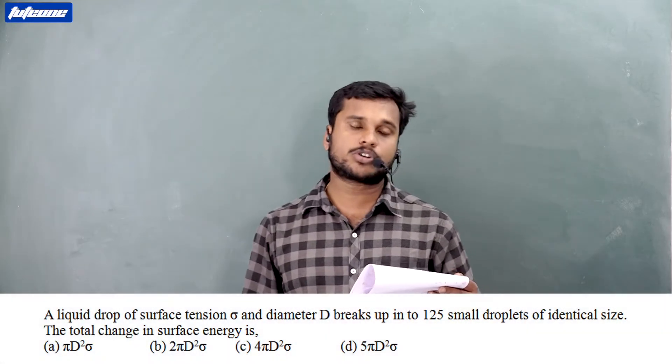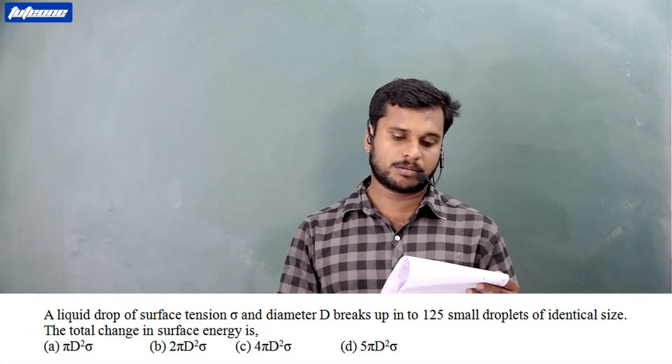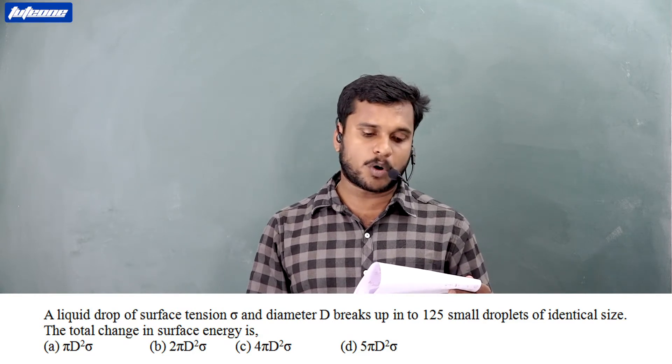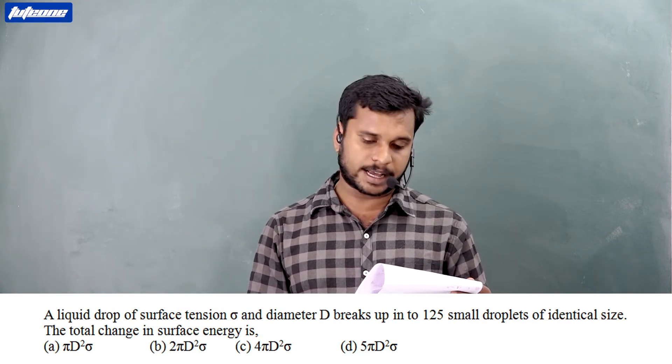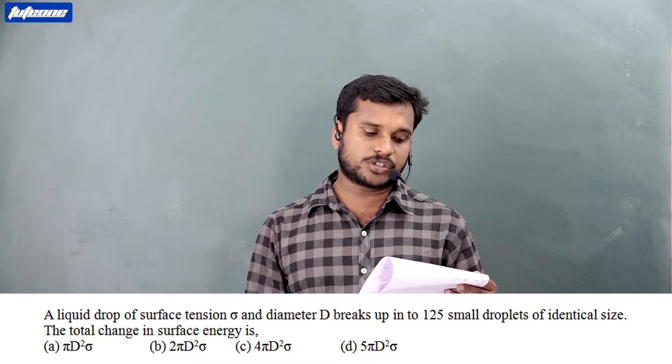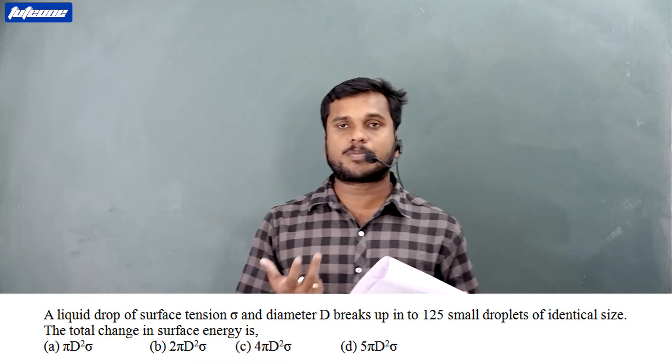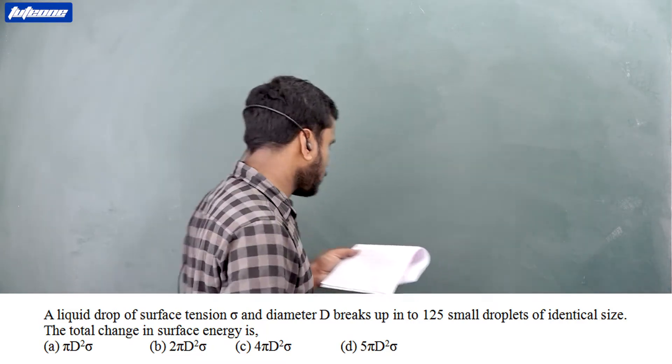Question number 22: A liquid drop of surface tension sigma and diameter D breaks up into 125 small droplets of identical size. The total change in surface energy is? So here a big droplet is breaking into small fractions.